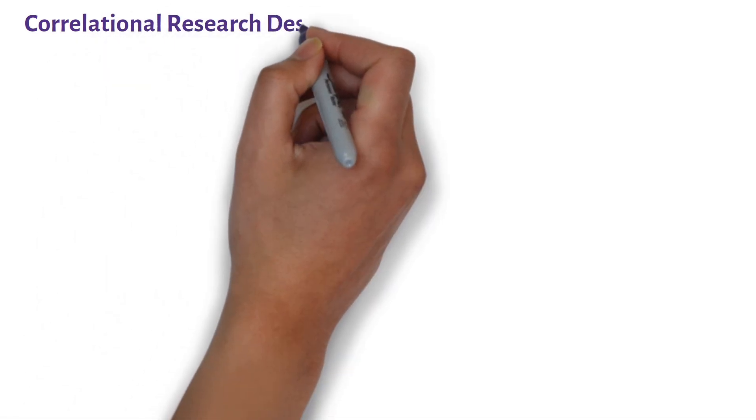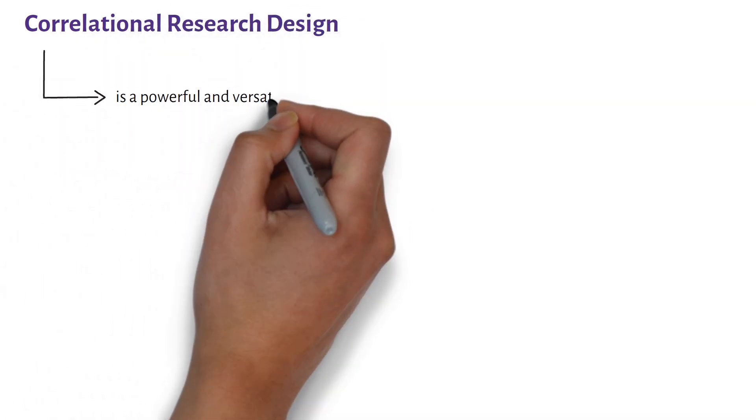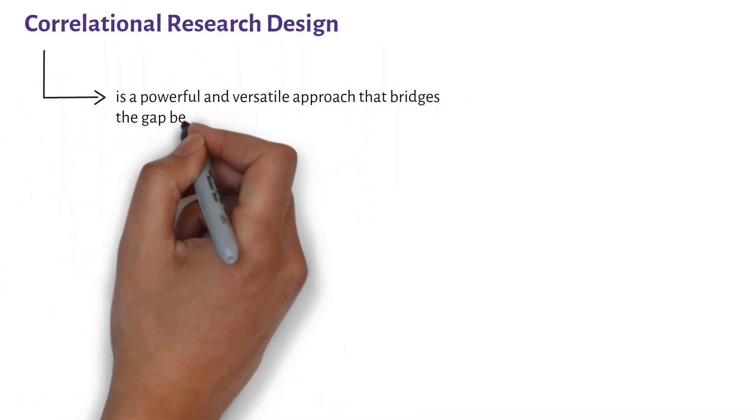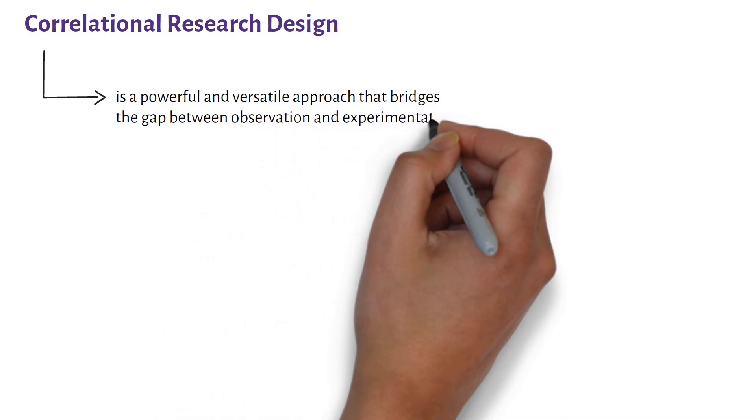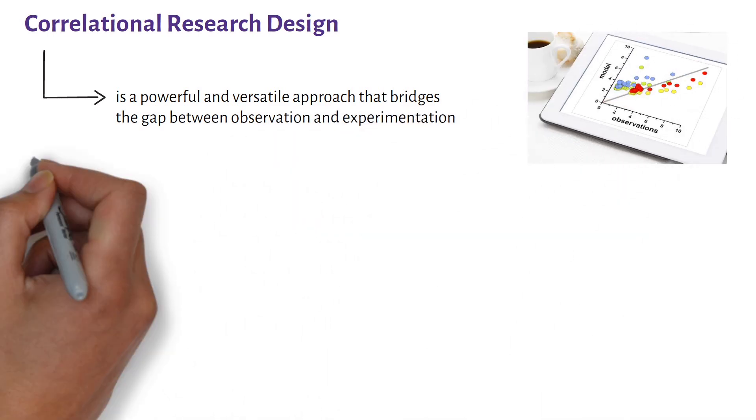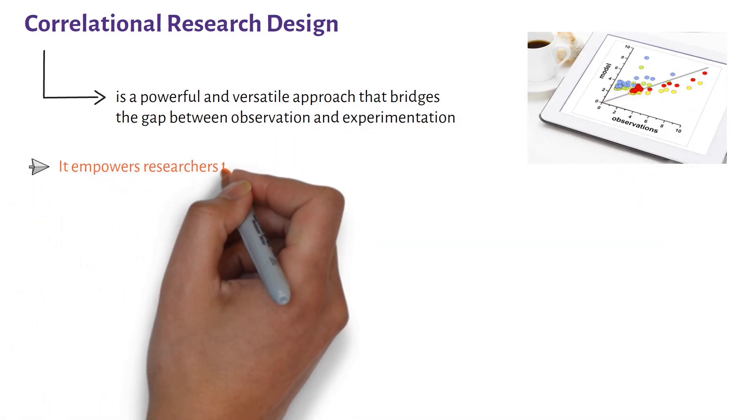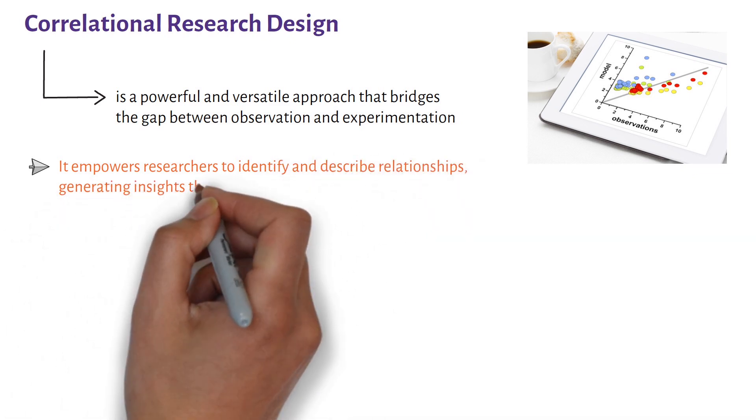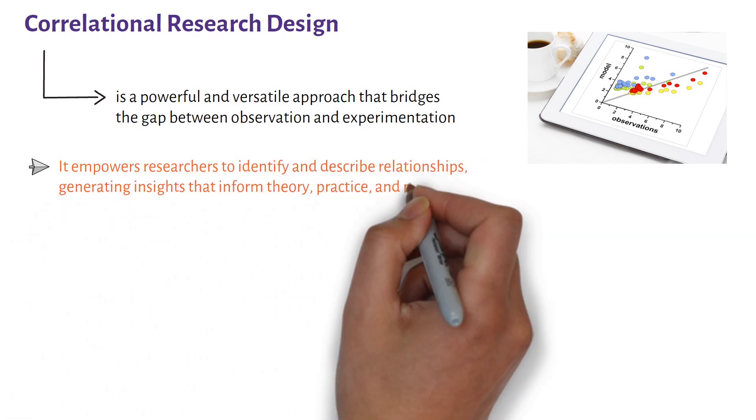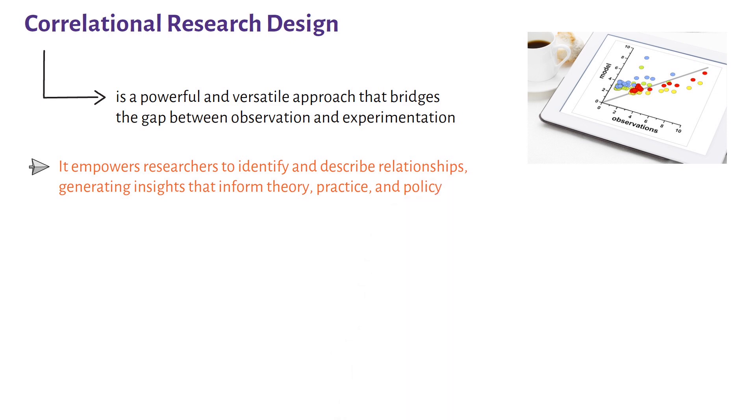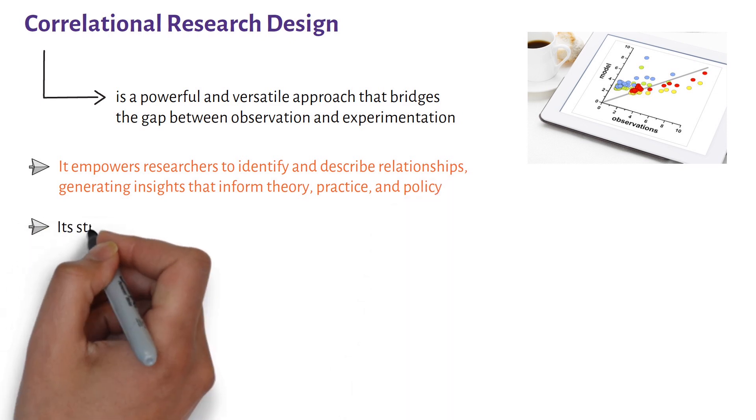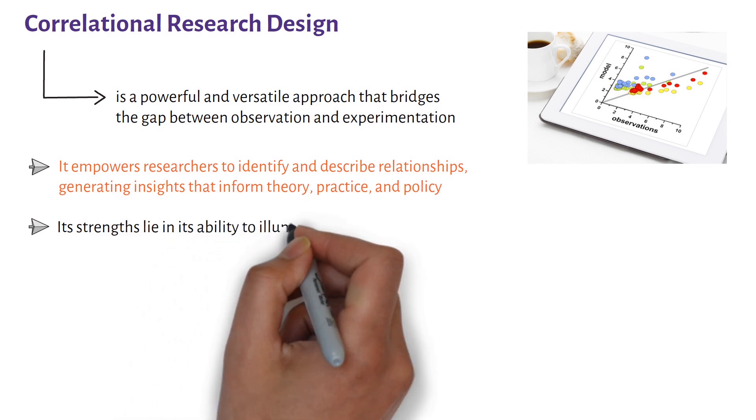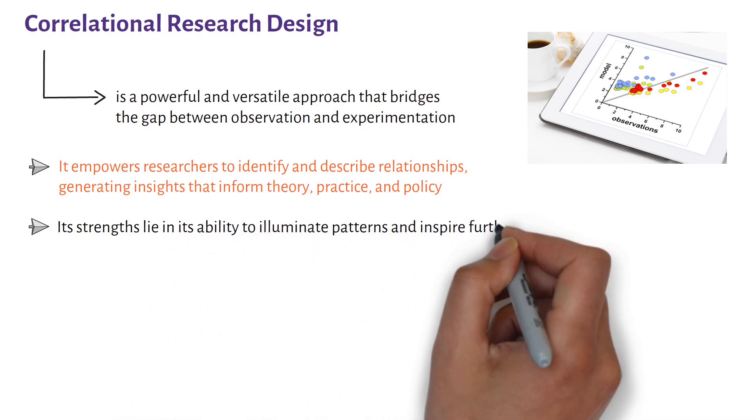In conclusion, correlational research design is a powerful and versatile approach that bridges the gap between observation and experimentation. It empowers researchers to identify and describe relationships, generating insights that inform theory, practice, and policy. While it has limitations, its strengths lie in its ability to illuminate patterns and inspire further inquiry.